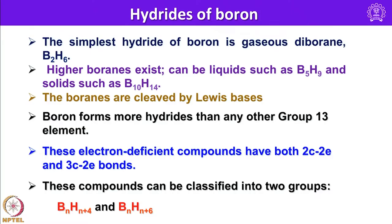The majority of these boron hydrides are electron-deficient compounds — that means they have both 2-center 2-electron bonds and 3-center 2-electron bonds. Most of the boron hydrides have a few terminal BH bonds which are 2-center 2-electron, and some of them are bridging BHB where we come across 3-center 2-electron bonds. These compounds can be classified into two groups: BnHn+4 and BnHn+6.